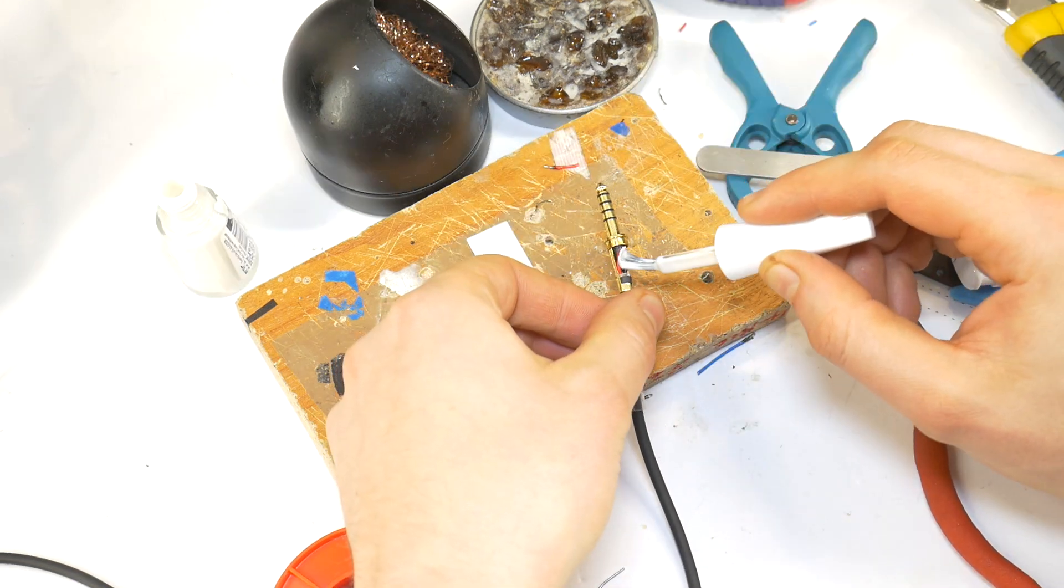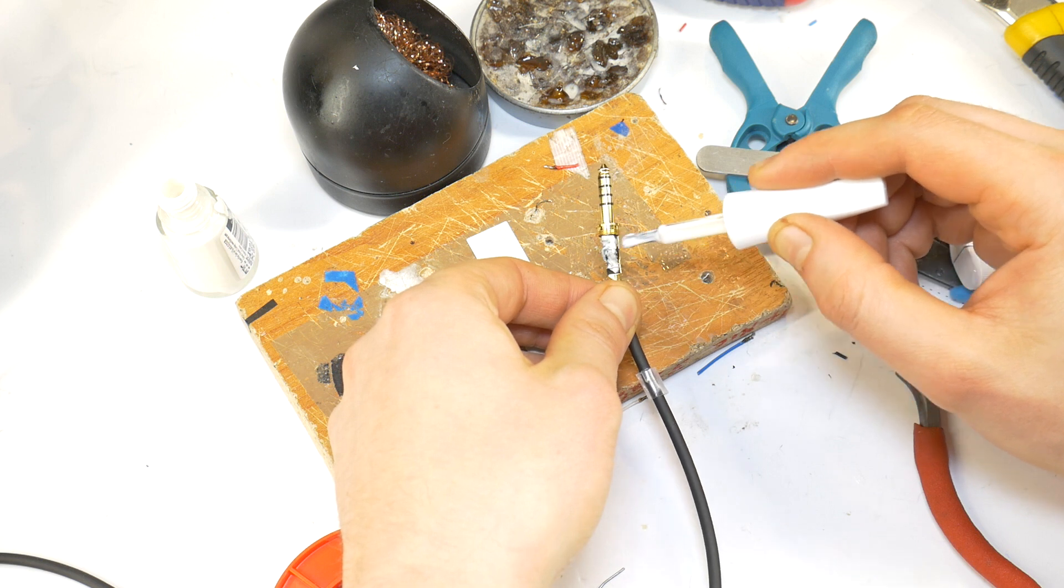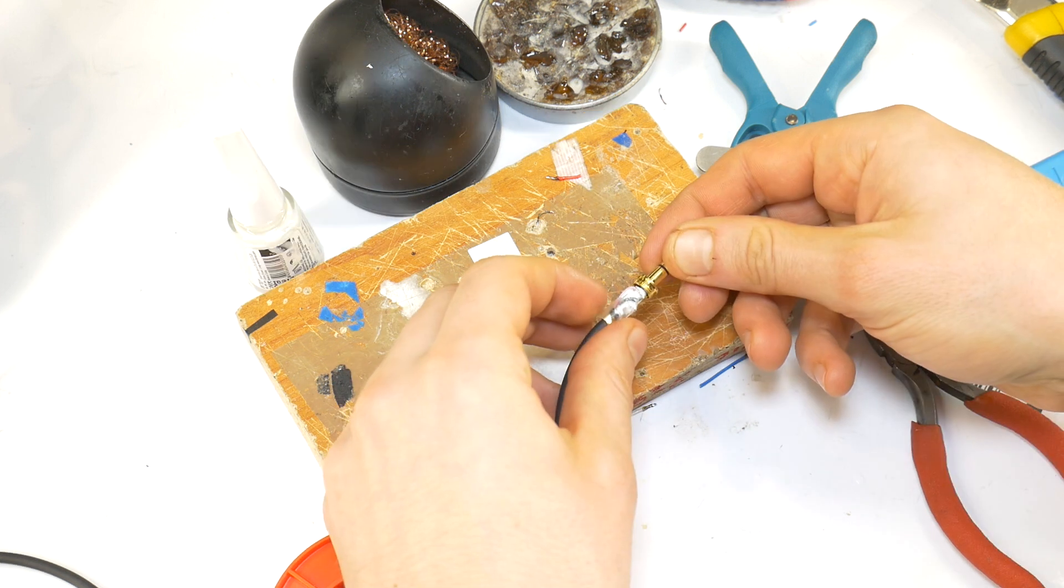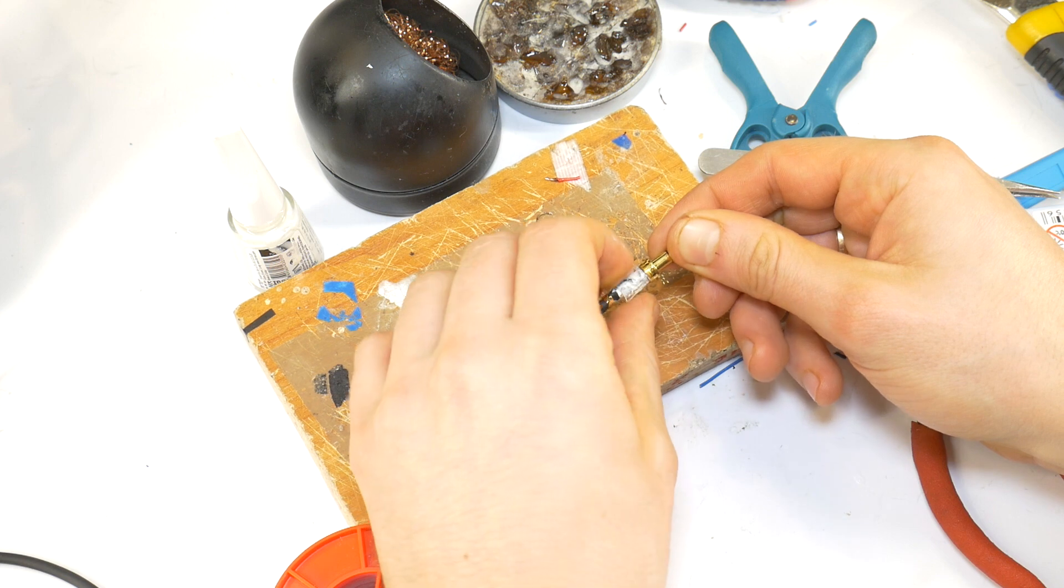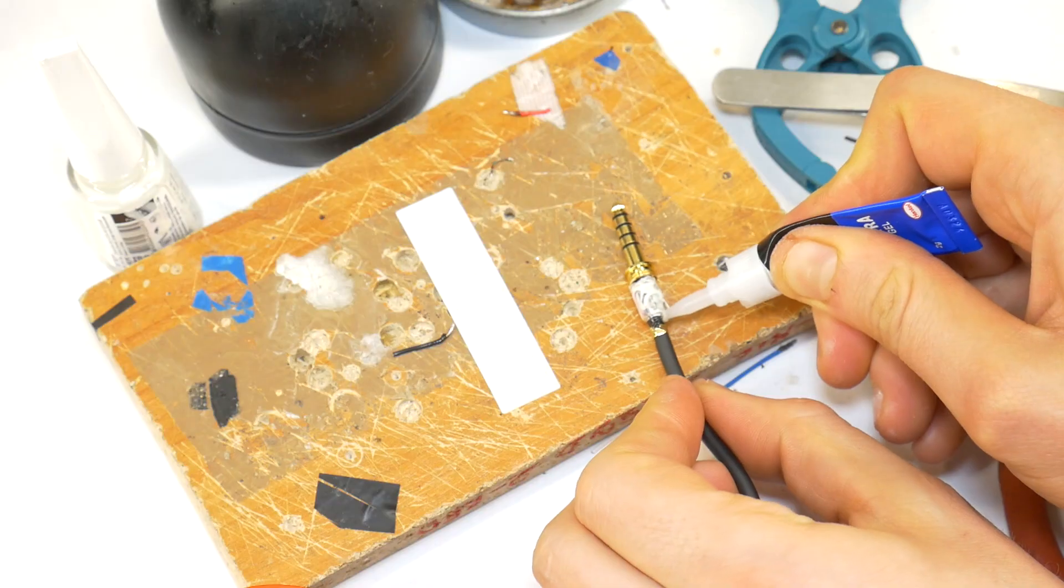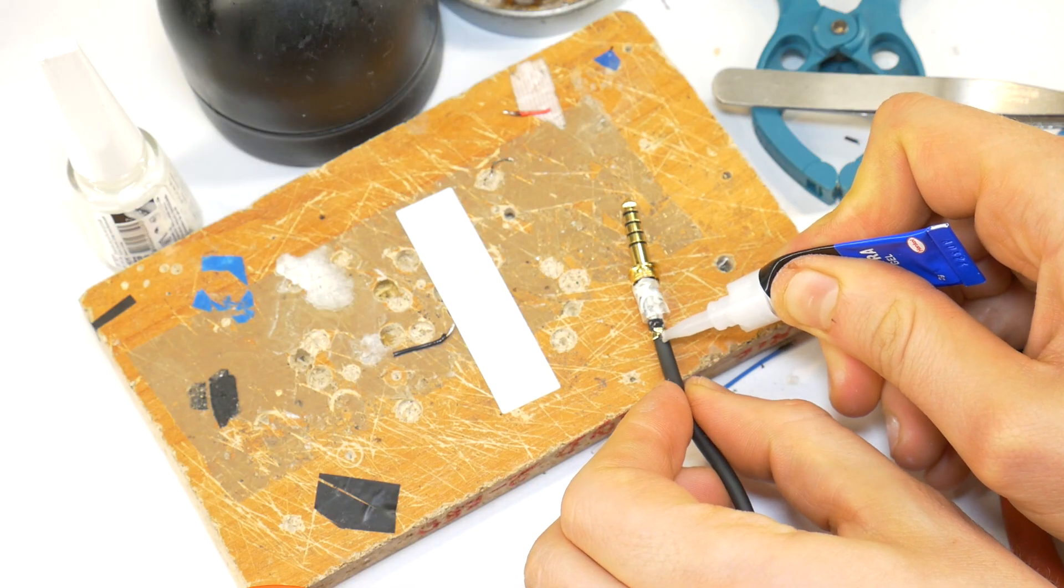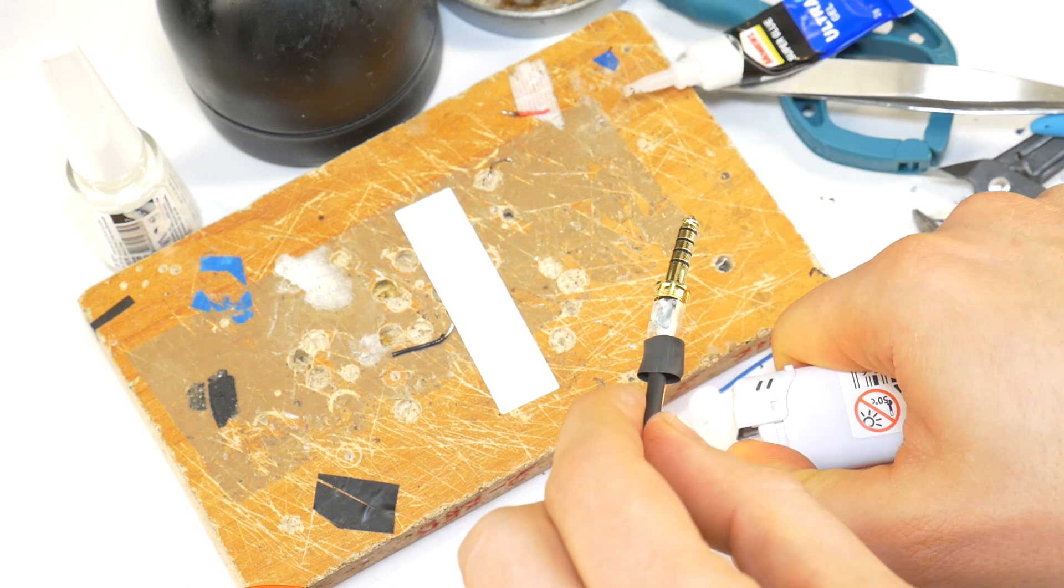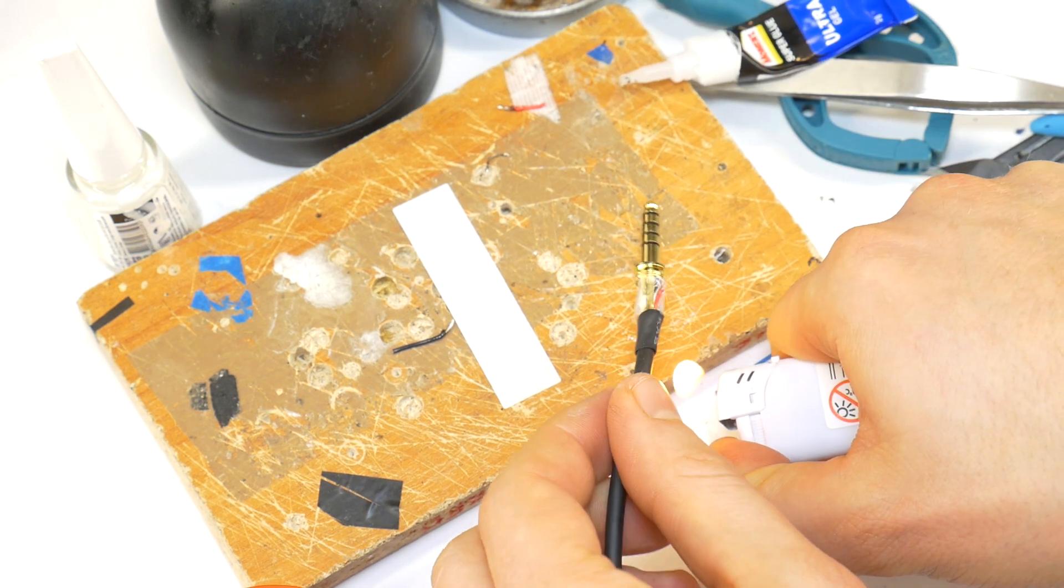Then cover all the contacts with nail polish to protect against short circuits. Then put a plastic sleeve over the top to prevent short circuits with the metal housing. Then apply super glue to the place where the wire is attached to the jack. Put heat shrink tubing on top for additional cable fixation.